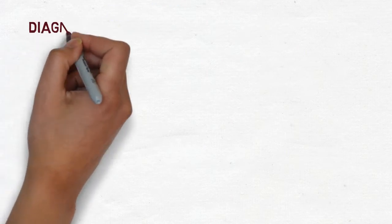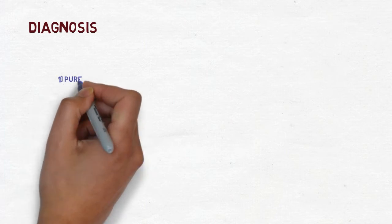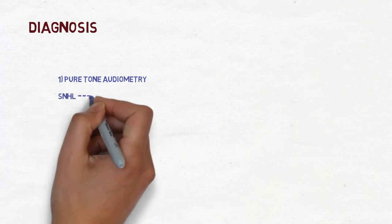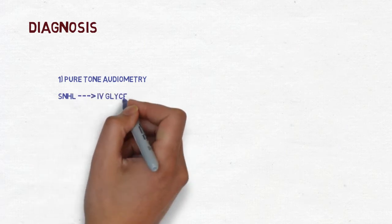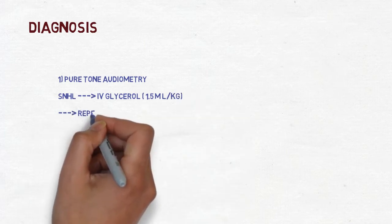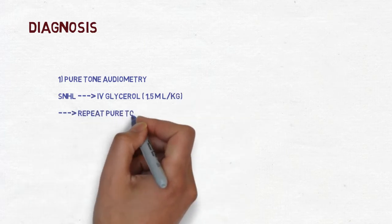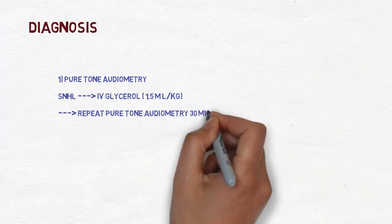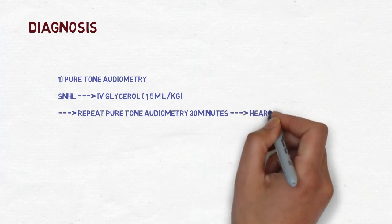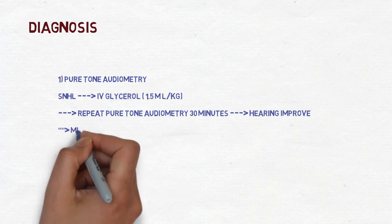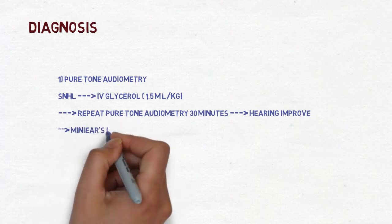Let's talk about diagnosis. The first one is pure tone audiometry. In pure tone audiometry if patient has sensory neural hearing loss then we can give IV glycerol. Glycerol is hygroscopic; it absorbs the excessive amount of endolymph in the ear. And then if we repeat the test we have improved hearing more than 10 dB. It's diagnosed that it is Meniere's disease.